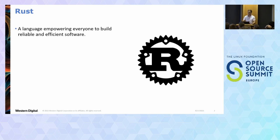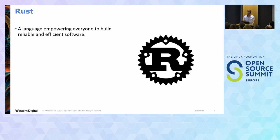Rust is great, but why bother switching? If it's as good as C, why not just stick with C? C has worked for so long, and I think everyone in this room probably knows C. Why learn something new? The reason is because of memory safety.